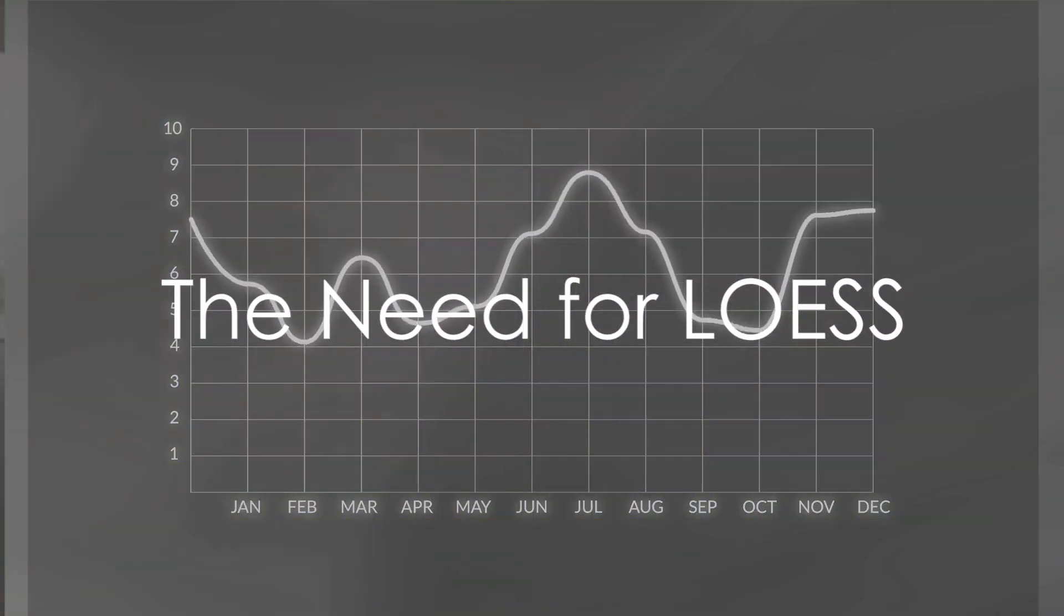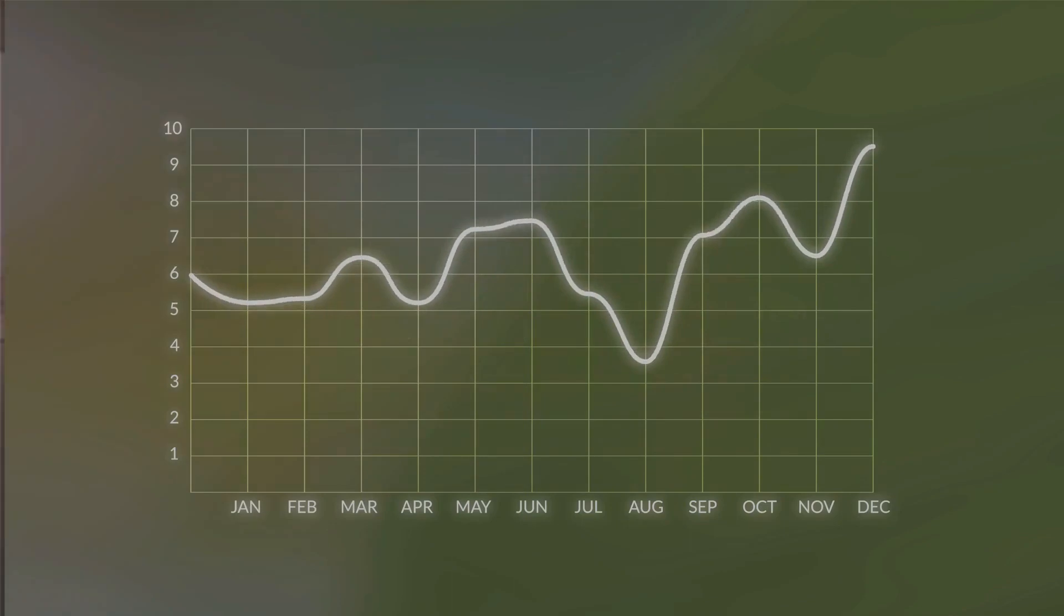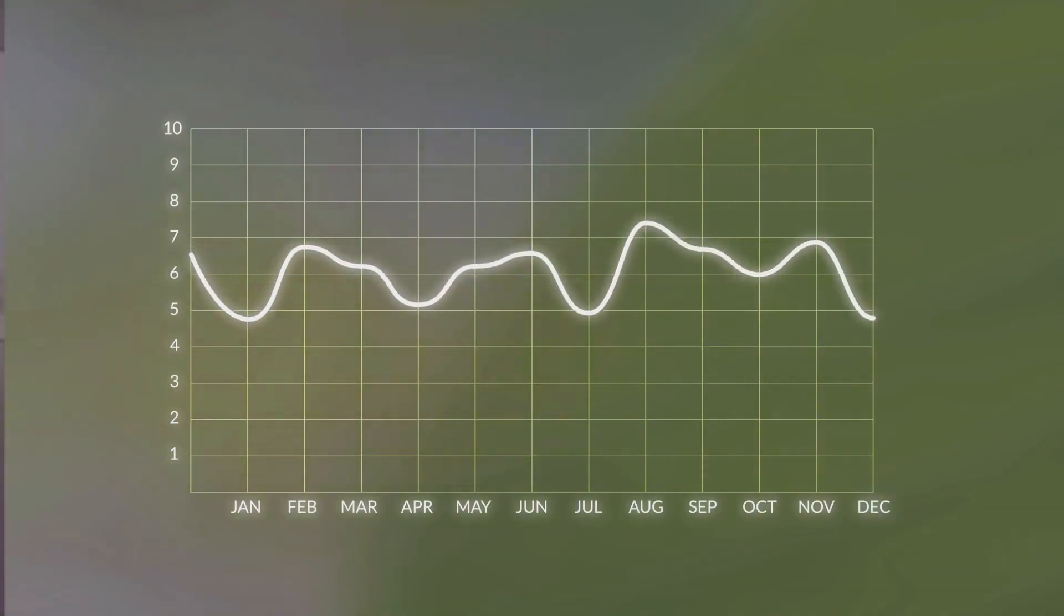In the realm of machine learning, data often doesn't behave. It's unruly, scattered, and doesn't always follow a straight line. That's where LOESS comes in, a method that allows us to draw a line of best fit through this data chaos.